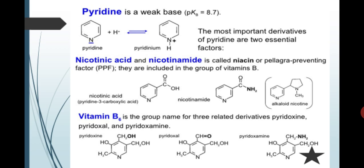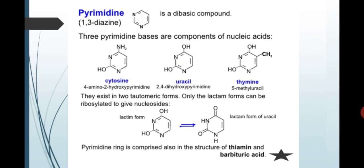And the most important derivatives of pyridine are two essential factors: nicotinic acid and vitamin B6. Nicotinic acid and nicotinamide is called niacin and these are part of vitamin B group.